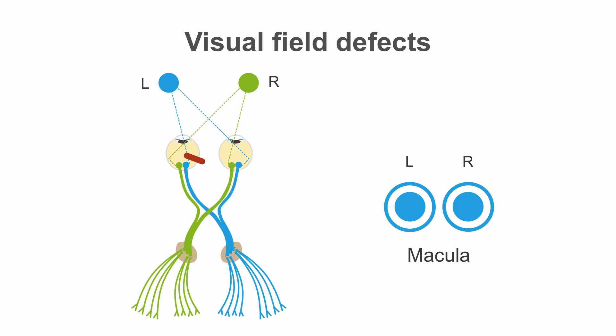Lesions involving the macula, the central area of the retina, lead to macular or central vision loss. Lesions of the optic nerve before the chiasm will result in complete visual loss from that eye.